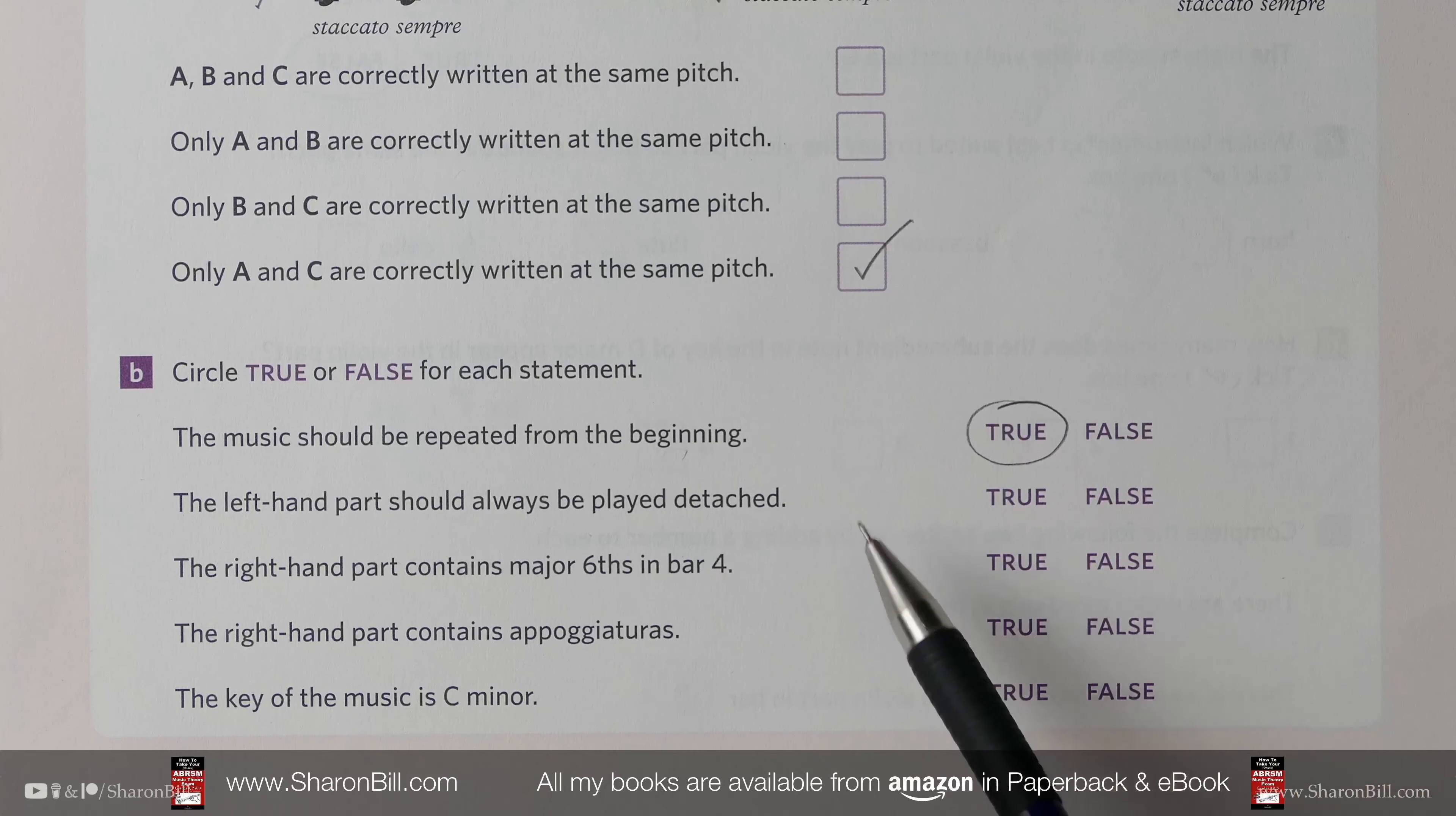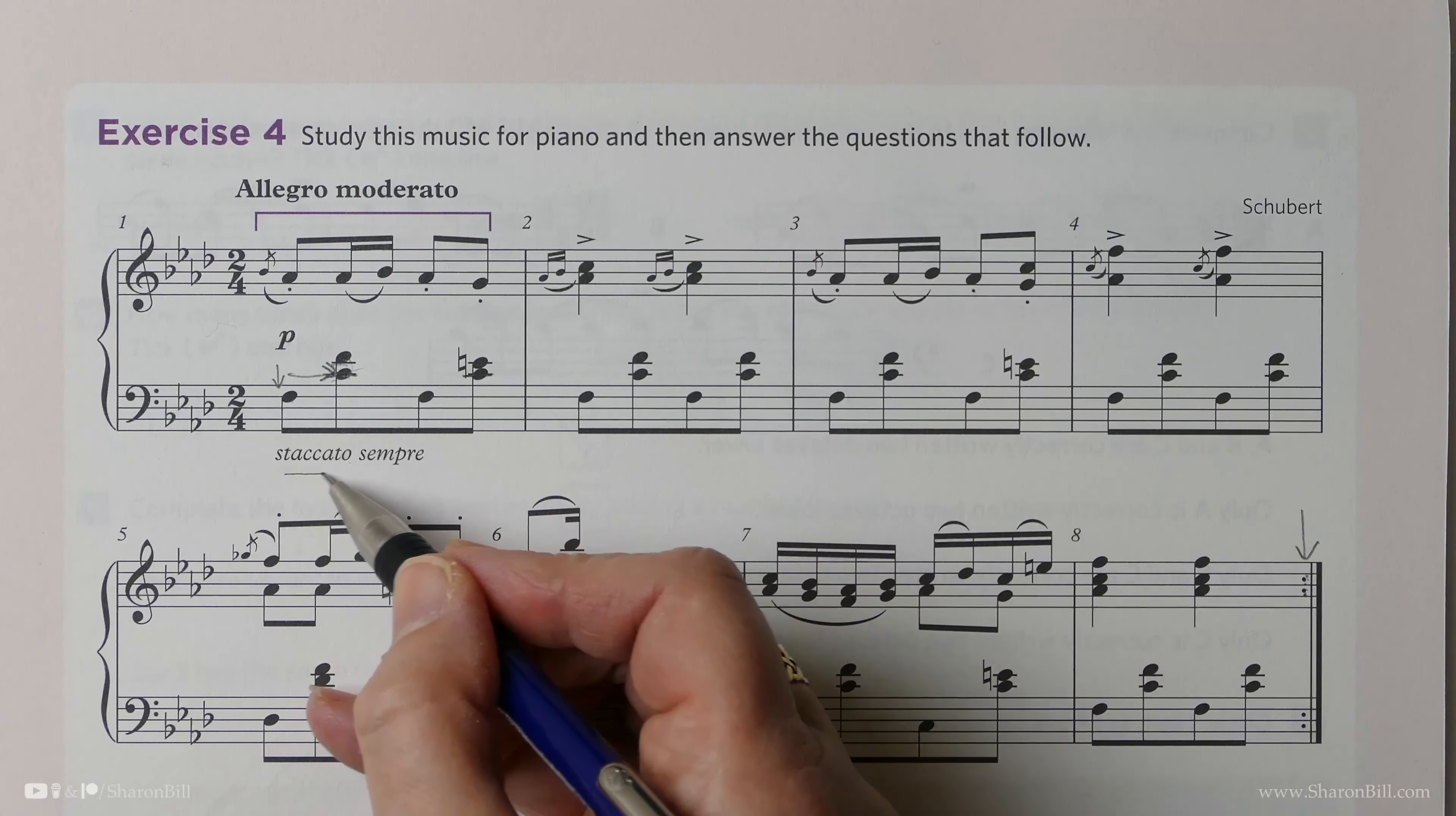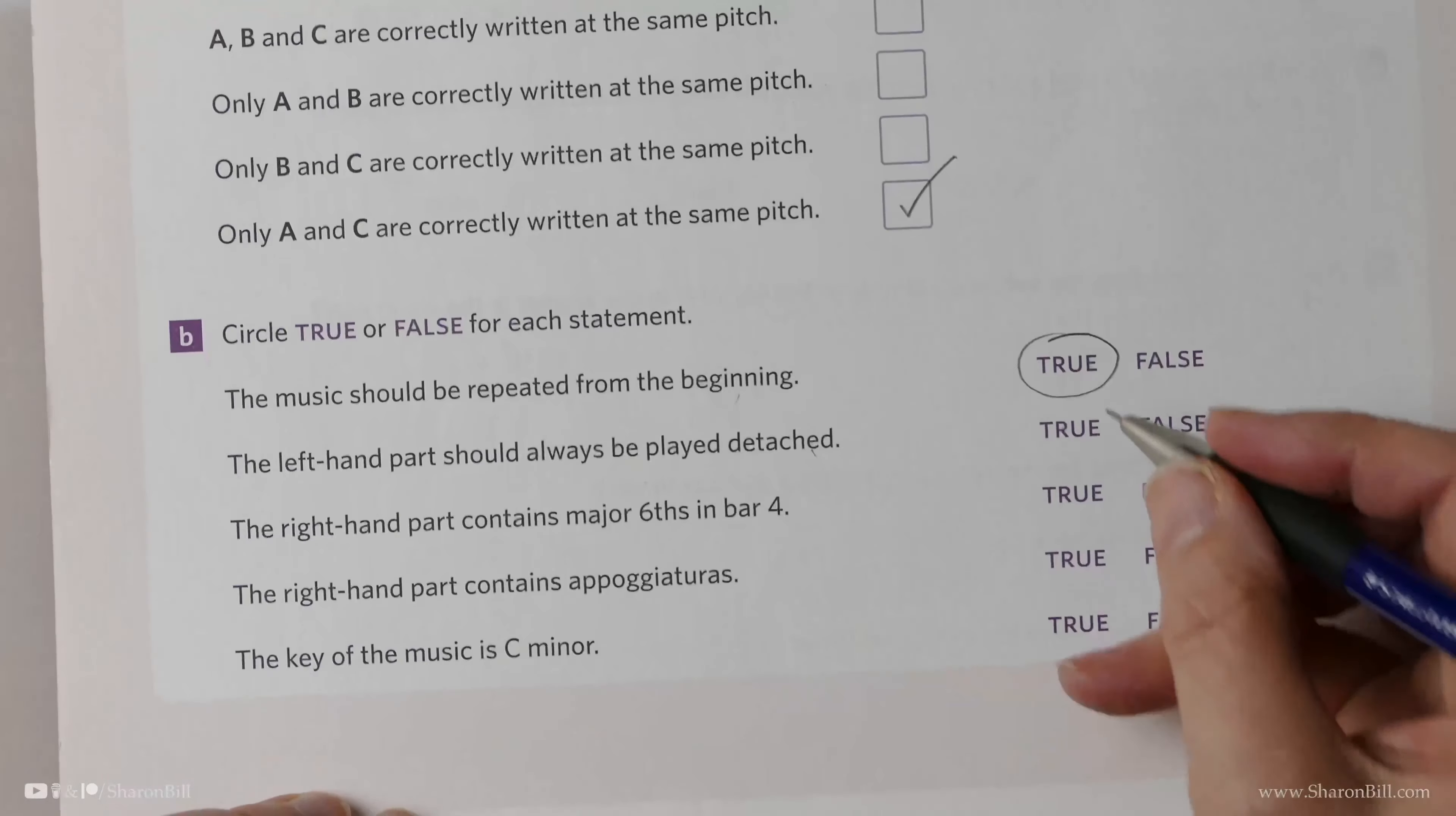Is it true that the left hand should always be played detached? This is our clue. Staccato is detached, and sempre means always. So that is correct—we are always detached.